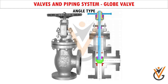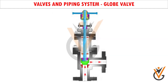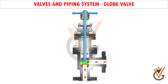Angle type: The inlet and outlet ends are placed at right angles, and the diaphragm is generally a simple flat plate. The fluid flows through the valve body in a right-angled flow path and gets discharged downwards in a more symmetrical manner.